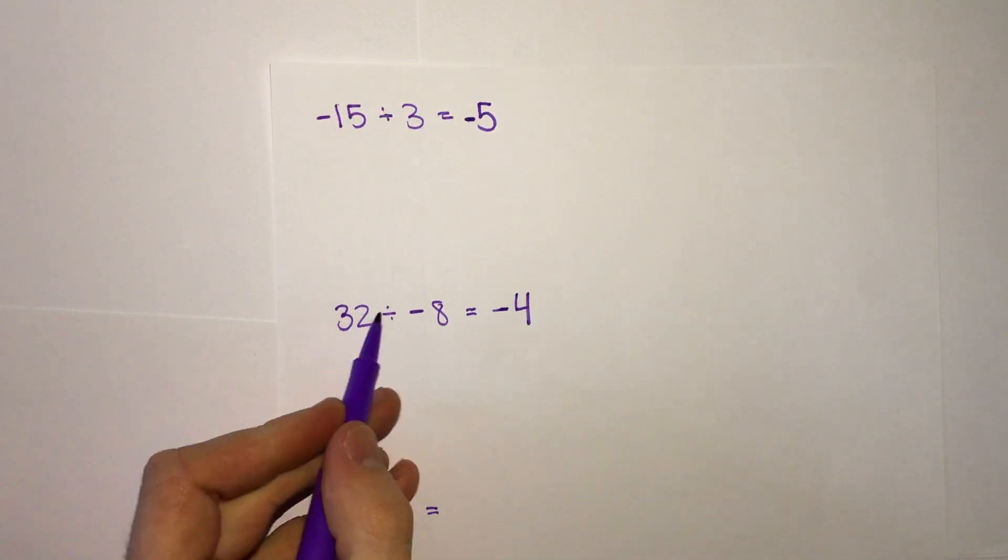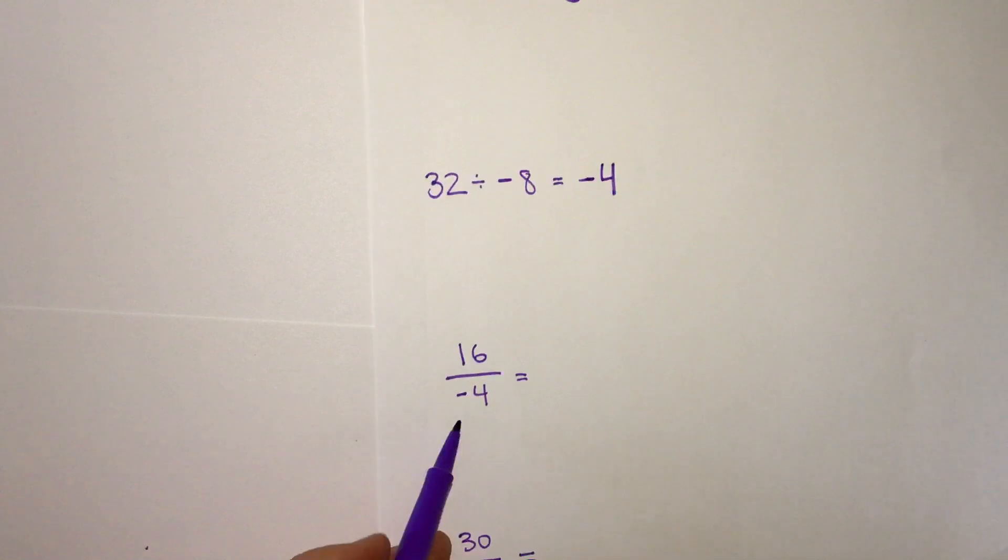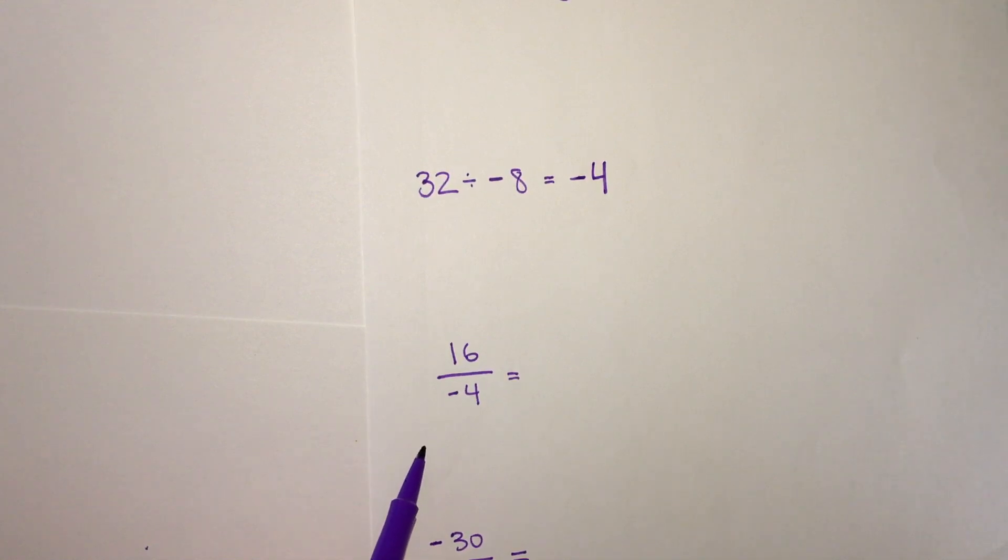Sometimes, or often, you'll find that division isn't written with a division sign but as a fraction. So this fraction 16 over negative 4 literally means 16 divided by negative 4.